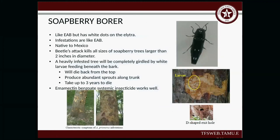Soapberry borer — it's similar to EAB but has white dots on its back. It's originally native to Mexico and attacks and kills all sizes of soapberry trees larger than two inches in diameter. Heavily infested trees will be completely girdled with white larvae feeding beneath the bark. They make similar patterns to EAB but more straight-lined rather than zigzag. You'll see dieback from the top and an abundant amount of sprouts from the trunk. It will take about three years to die. Use imidacloprid benzene systemic insecticide. These also produce a D-shaped exit hole, which is distinctive — most borer insects produce a circular exit hole.